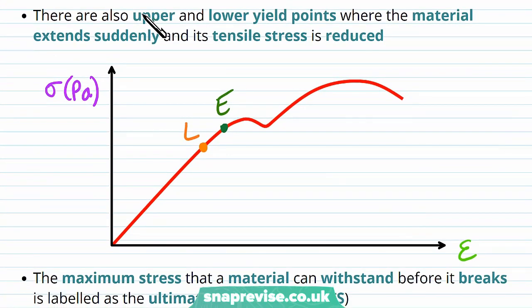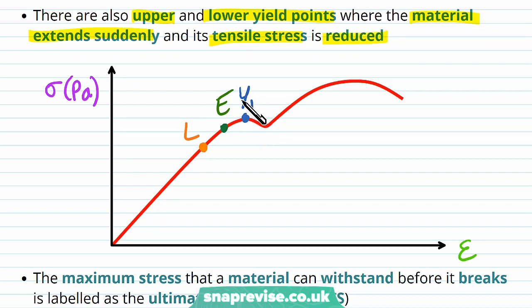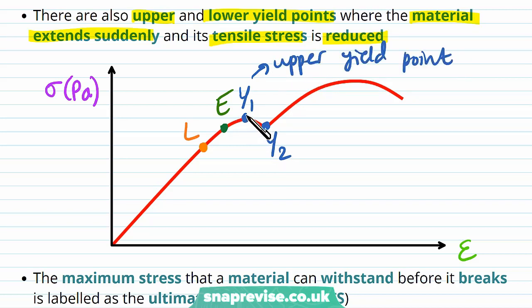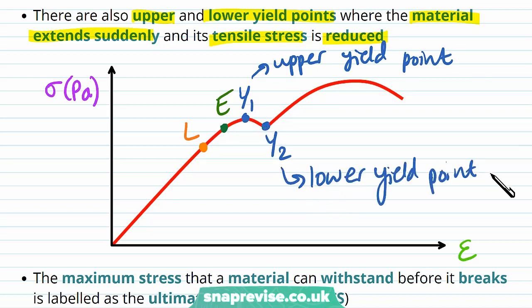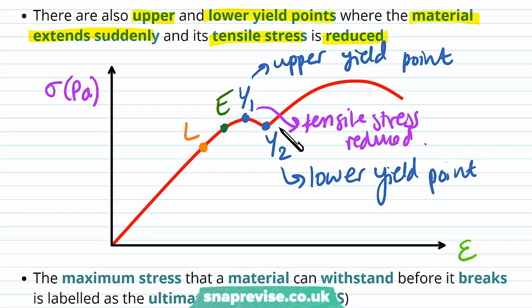There are also upper and lower yield points where the material extends suddenly and its tensile stress is reduced. The upper yield point Y1 is the peak of a small hump on the graph, and the lower yield point Y2 is the subsequent dip. Between Y1 and Y2, the tensile stress is reduced but the strain still increases.